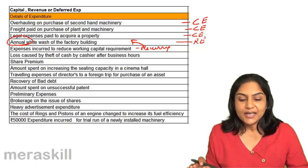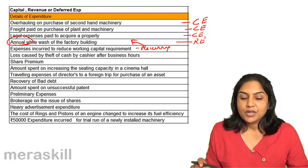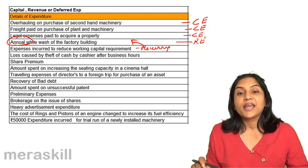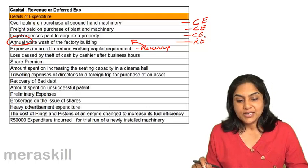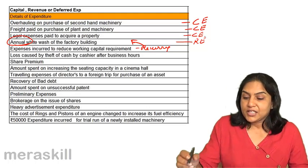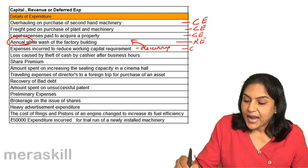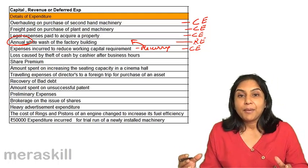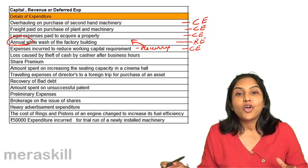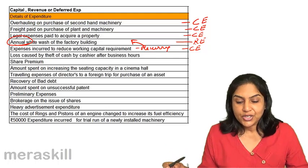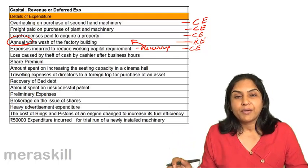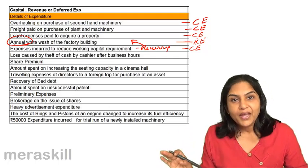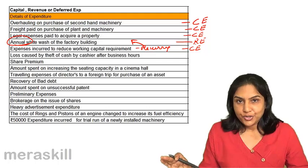Expenses incurred to reduce the working capital requirement would be a capital expenditure. It is an expenditure giving a benefit of a long-term nature, as the working capital requirement would be reduced.